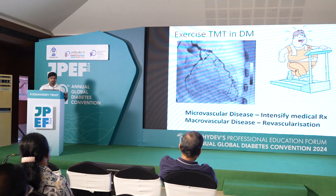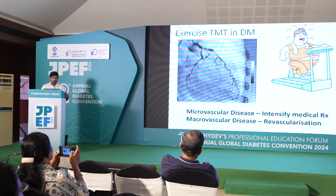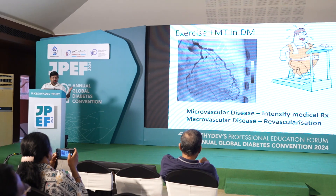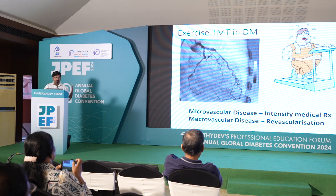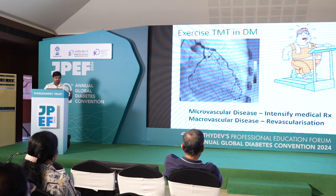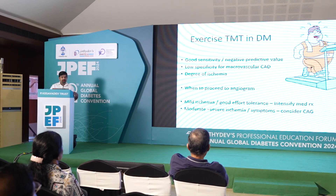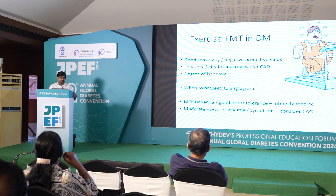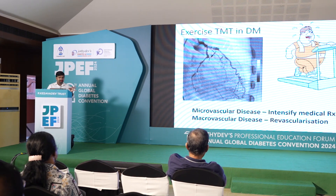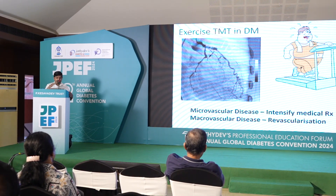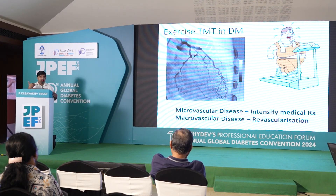I'll talk a little bit about treadmill tests in diabetes, which I think is a very useful screening tool. This diabetic coronary shows both microvascular and macrovascular disease. TMT is actually a very sensitive tool but it cannot differentiate micro and macrovascular disease. If you have microvascular disease, all you need to do is intensify your medical management — the patient falls into the secondary prevention category, for which management is more intensive.